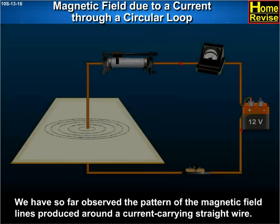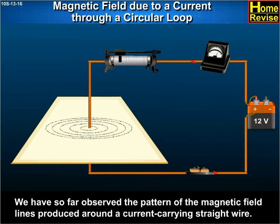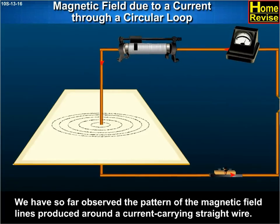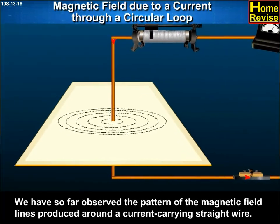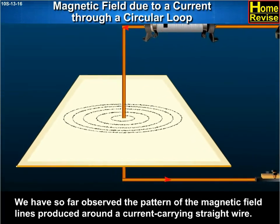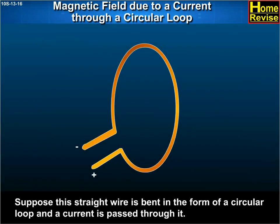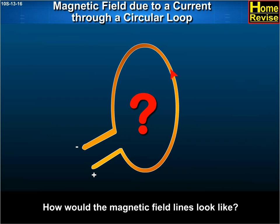Magnetic field due to a current through a circular loop. We have so far observed the pattern of the magnetic field lines produced around a current carrying straight wire. Suppose the straight wire is bent in the form of a circular loop and a current is passed through it. How would the magnetic field lines look like?